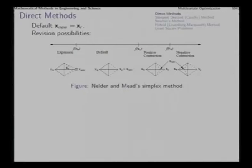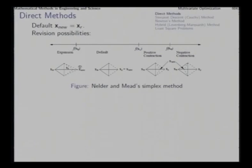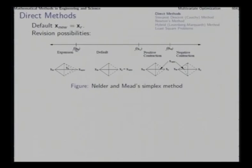Other than this default replacement, we can consider several other options. The default option is the reflected point x_r. If it happens that the function value at x_r turns out to be better compared to even the best point we currently have, that means this is a very good direction to go forward. In that case, we may decide not to stop at x_r itself but to go further. So we expand the simplex and go to x_nu. If the function value at x_r is lower than the function value at x_best, then we consider an expansion of the simplex.